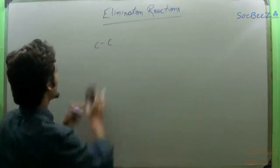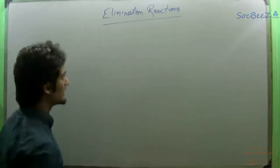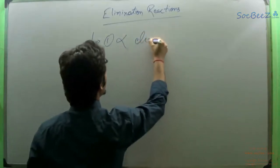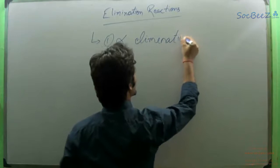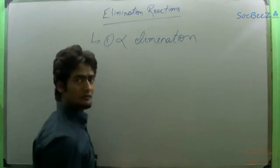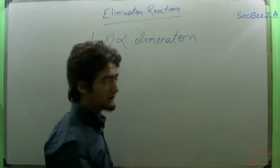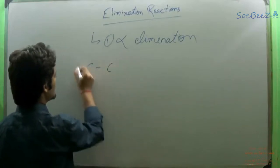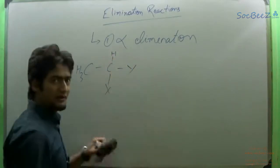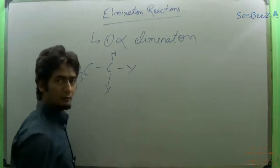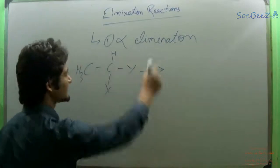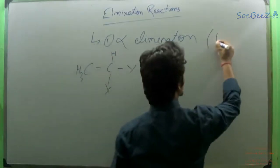We have categorized elimination reactions into three categories. The first one is alpha elimination. In alpha elimination, both the groups or atoms are eliminated from the same carbon atom. This is known as alpha elimination reaction, or sometimes it is also known as 1-1 elimination.